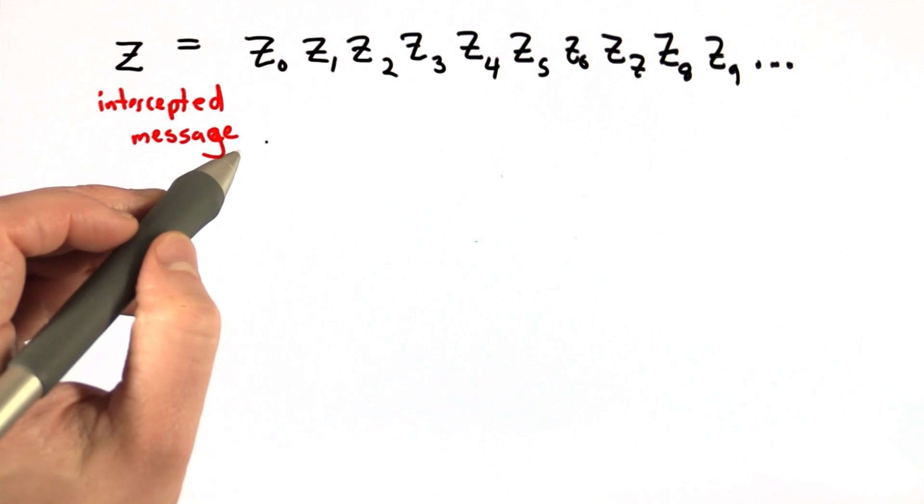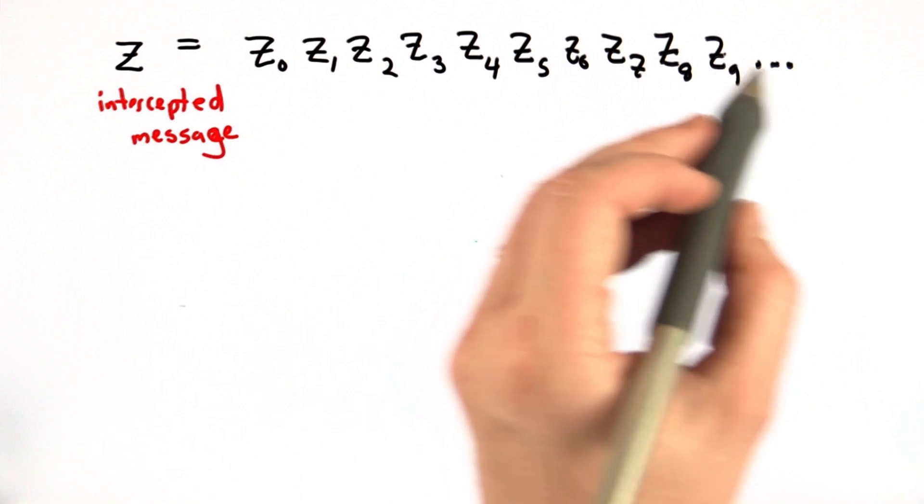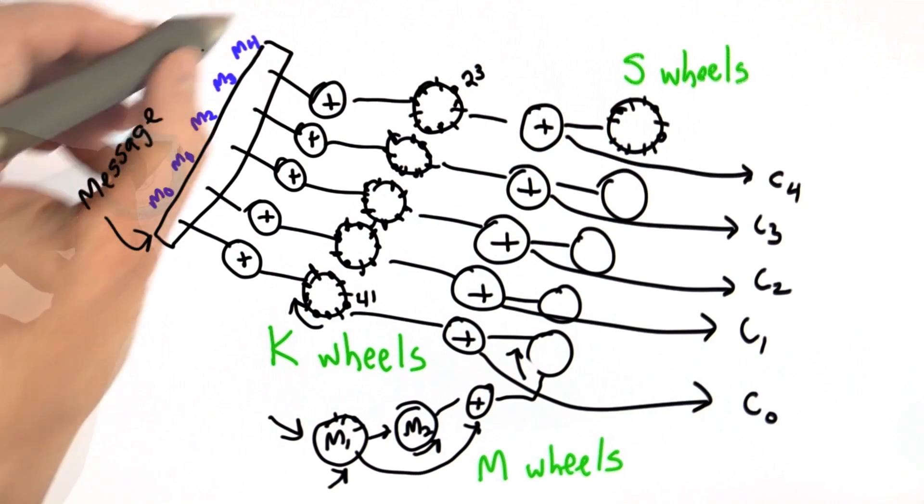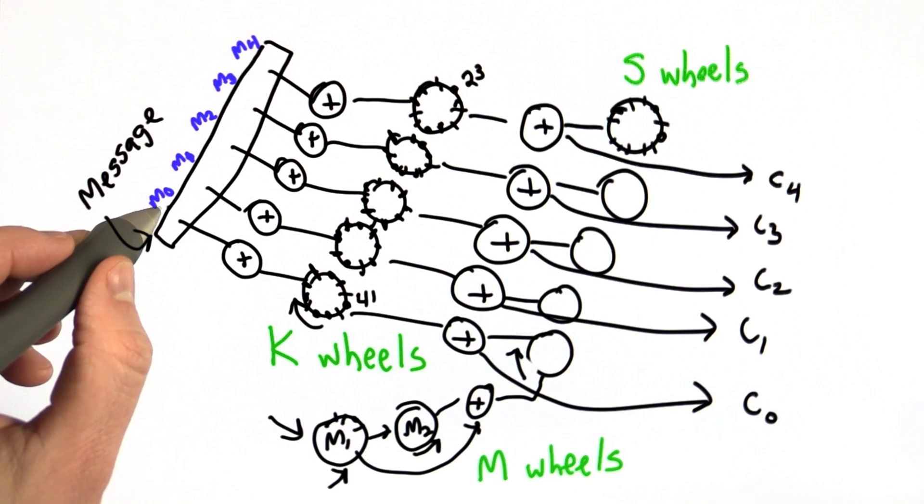Here's the intercepted message that was intercepted over the radio. We can think of all the characters in the message. The important thing to remember about the Lorenz cipher is that the message encoding, each character is encoded into five bits using Baudot code.